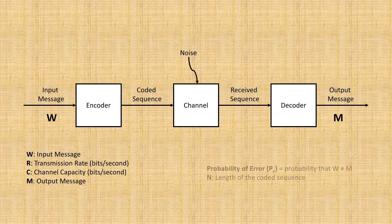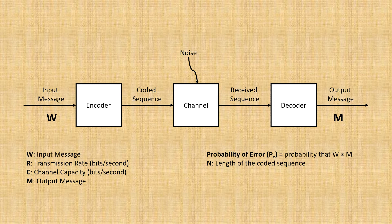There's also some other variables we care about, like the transmission rate R, which is how fast information transmits through the system, and the length N, which determines how long our coded sequence is in bits.